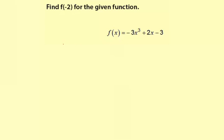So here, I'll write it over here. f of negative 2 — that's what we're going to find — and that's equal to this function with an input of negative 2. So, negative 3, and we're going to have negative 2 to the third in parentheses, plus 2 times negative 2, minus 3.